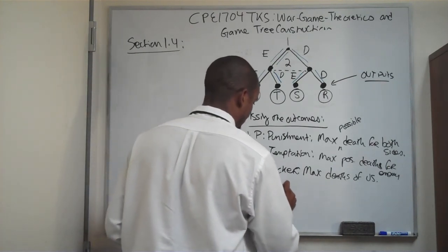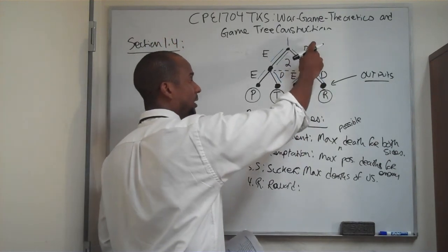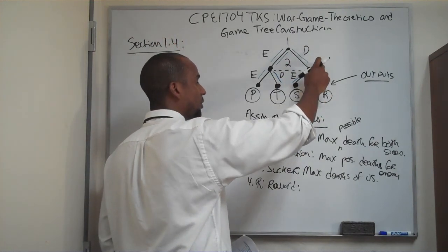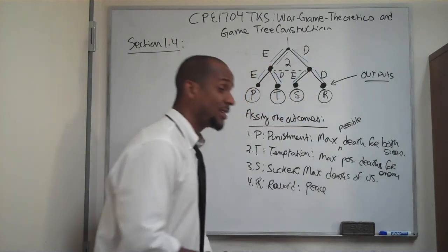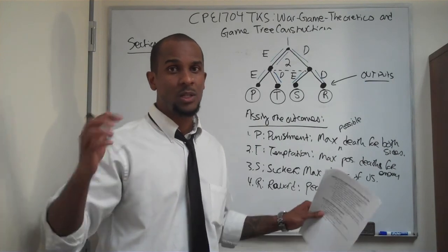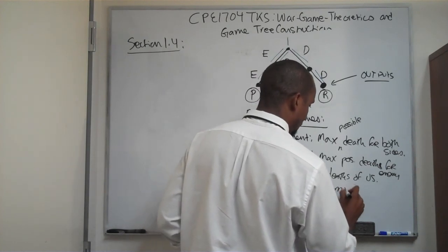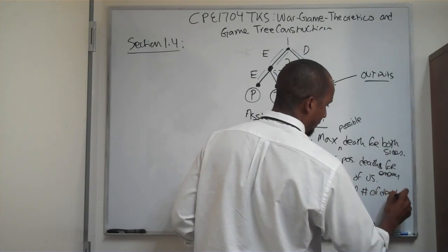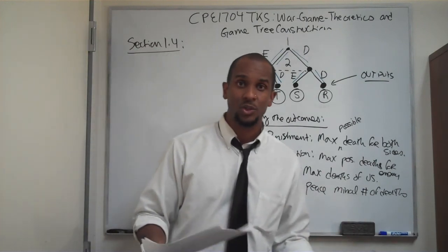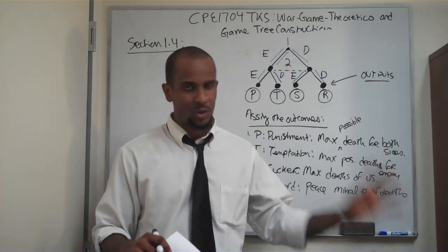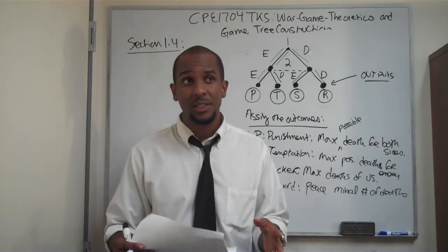And then number four — R, reward. That's when we both go defensive and de-escalate the conflict. We get rewarded because there's a state of peace. I would define this state of peace not as some theoretical state where there's no violence at all — I don't believe that's possible — but as the smallest possible number of deaths for international conflict. That would be synonymous with a state of peace, the best possible option, or in the ideal case, an actual scenario with no bloodshed.